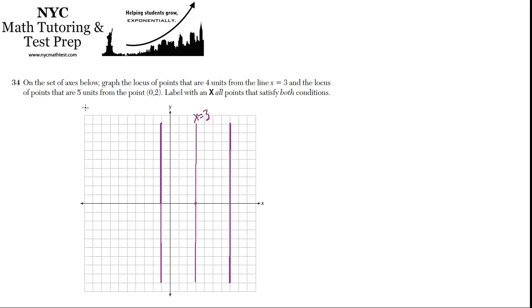Now they want us to graph the locus of points that's 5 units from the point (0, 2). So (0, 2) is here. And what is the locus of points that's a certain number of units from a point? Well it's a circle, right? So before we try to actually draw the circle, let's just draw a few points that are 5 units from this point.